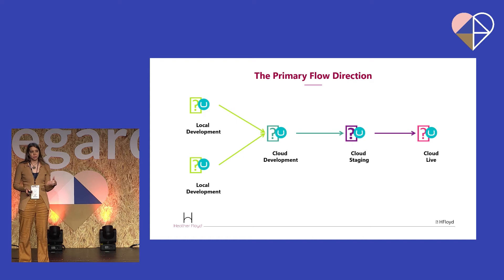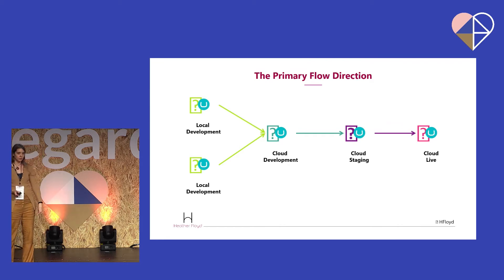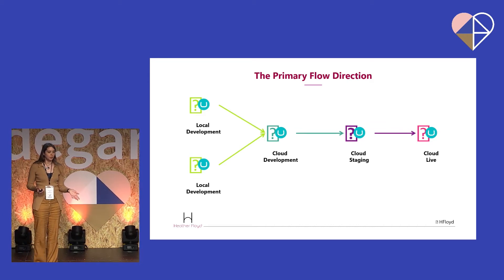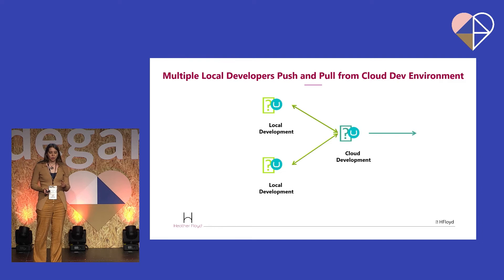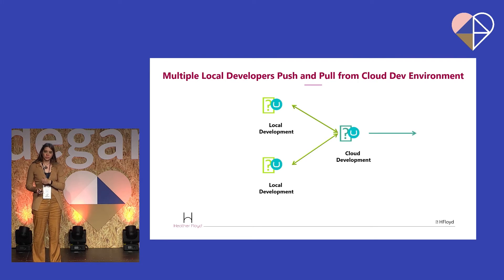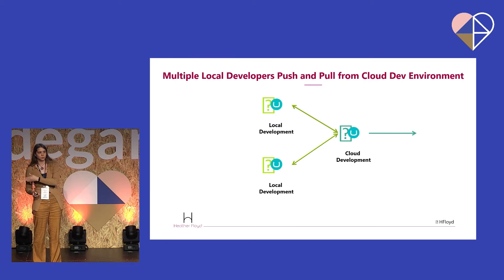Generally you want everything to move in a forward direction for your deployments, including schema, code, and content. In my example I've got three cloud environments: development, staging, and live, plus two separate local development environments. Multiple developers can keep synchronized through the cloud development environment by pushing and pulling Git changes. Umbraco Cloud can handle schema and code updates on various environments and will automatically put a Git commit into your repository.